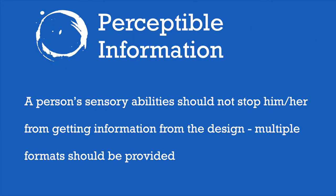The fourth NDA principle is perceptible information. A person's sensory abilities should not stop him or her from getting information from the design. Multiple formats should be provided. Imagine yourself at a subway station. There's going to be plenty of information provided visually, and that will work for many people, but not all people. We could also provide this information audibly with someone reading aloud the information, and hopefully provide some kind of braille translation for people who cannot hear or see.